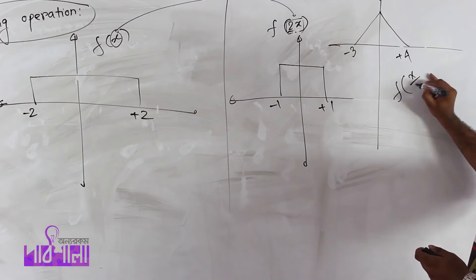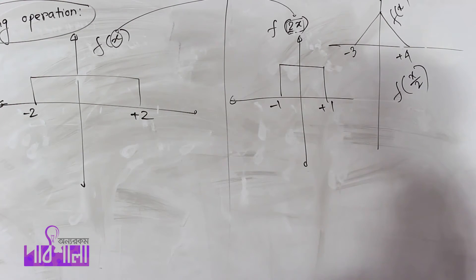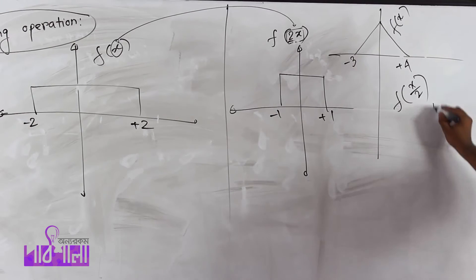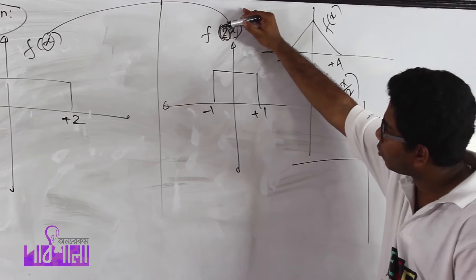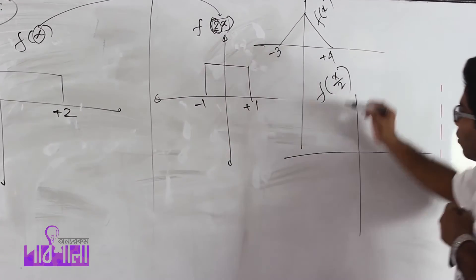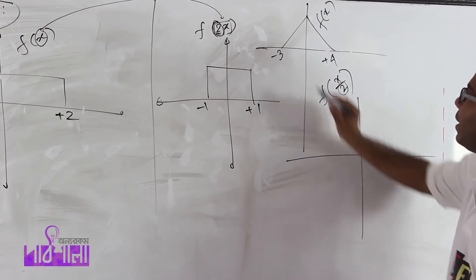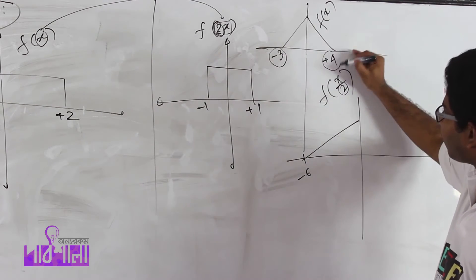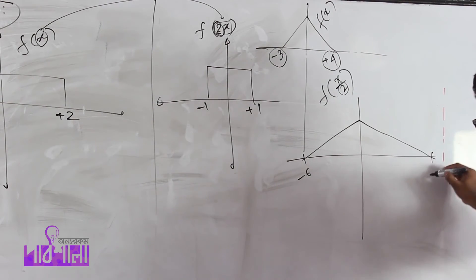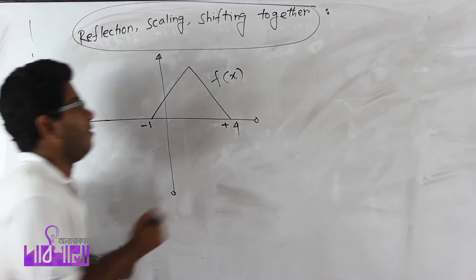This is f of x by 2. This is f of x, then we can see f of x by 2. f of x by 2 is simple. If we have 2, we can see the same graph. What is the graph? Minus 3 becomes minus 6. Plus 4 becomes plus 8. Now we have f of x by 2, and we can see the graph of x by 2.